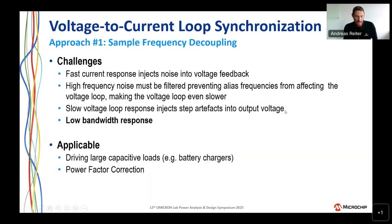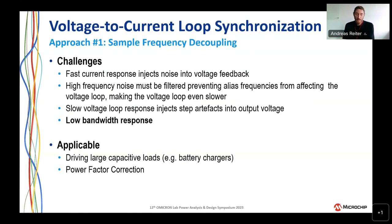That implementation is common but always results in very low bandwidth response. Fast current response injects noise that can only be eliminated by filtering and prolonging the voltage loop response — making the system slower and slower. The more noise issues encountered, the more dominant the stepping artifact becomes, requiring more filtering, creating a death spiral from which you cannot expect reasonable performance.